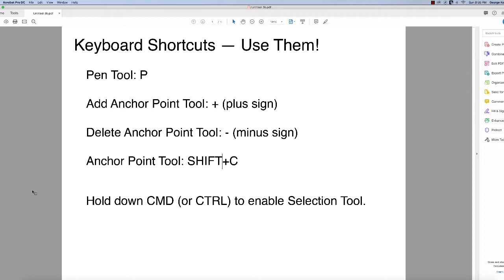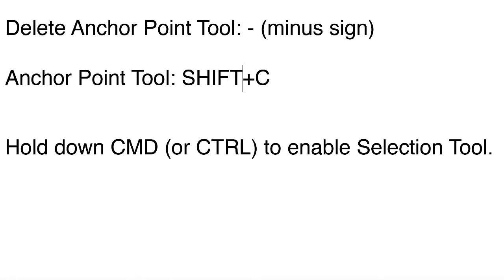To activate the Pen tool, hit the letter P. Add Anchor Point tool, just hit the plus sign on the keyboard. The Delete Anchor Point tool is just hitting the minus sign. The Anchor Point tool — that little bird beaky thingy — hit Shift-C on the keyboard. Hold down Shift, hit C, and that enables the Anchor Point tool. A big one I use a lot: on the Mac, hold down the Command key, or on the PC, hold down Control — it enables the Selection tool. I'll demonstrate that as we go.